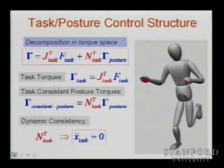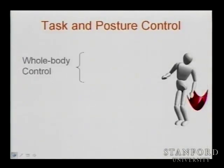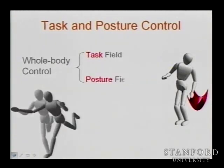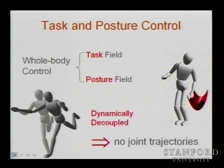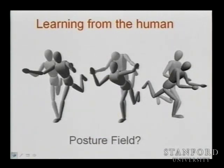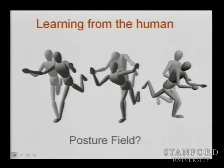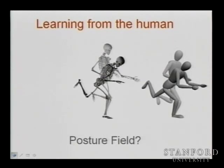Once you have this decoupling, you can control the system very effectively. The whole-body control uses a task field to control the task and a posture field to control the posture — the two are decoupled so you can generate motions without any trajectory. The question is how to find those energies and criteria. Well, if we are working with human-like robots, we should look at humans. How do humans do it? We already started to be inspired by humans — the way they move, use their hands, move their body — and we need to capture this through simple mathematical models.